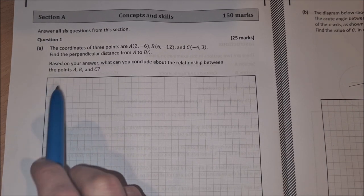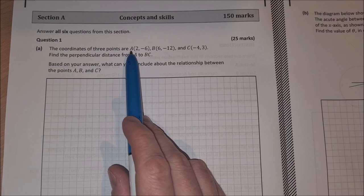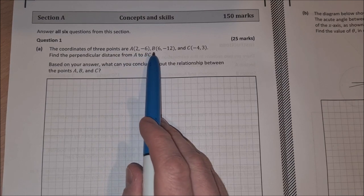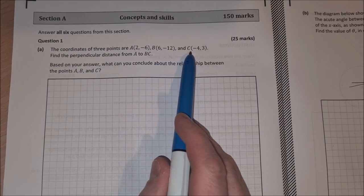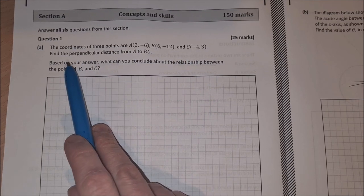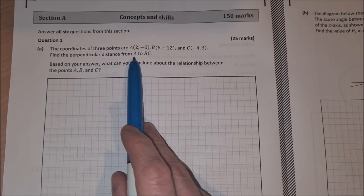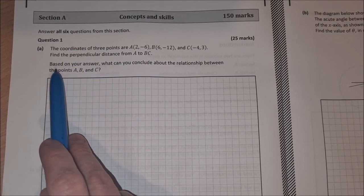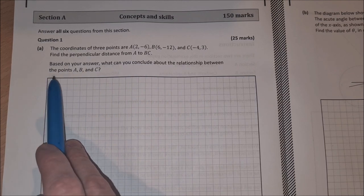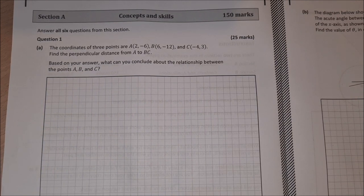Question 1 on Paper 2 is a coordinate geometry question. Part A says the coordinates of three points are A(2, -6), B(6, -12), and C(-4, 3). Find the perpendicular distance from A to the line BC and then, based on your answer, what can you conclude about the relationship between the points A, B, and C?